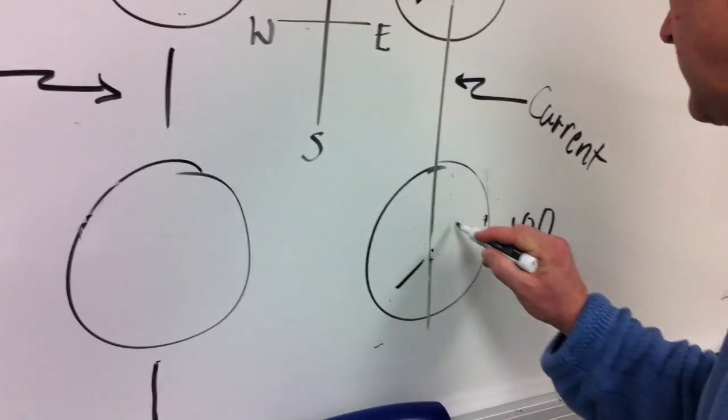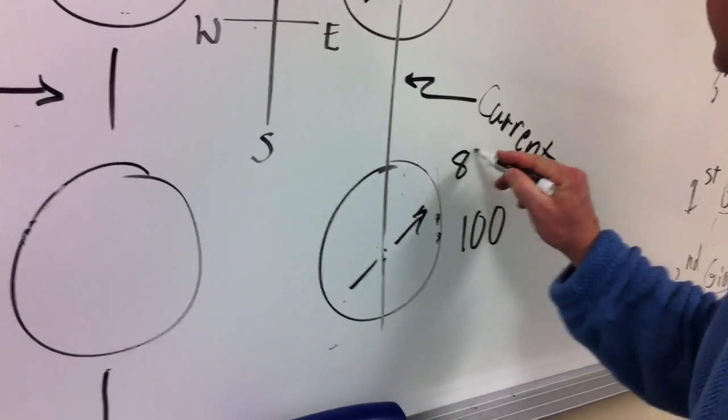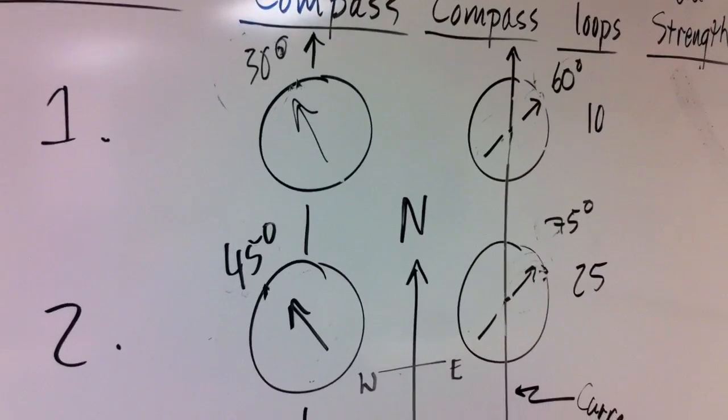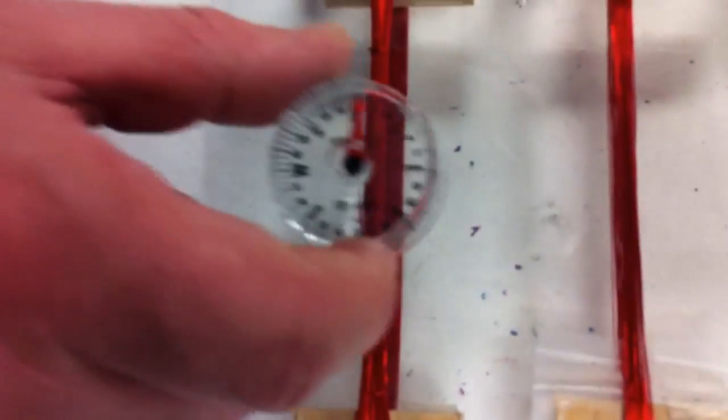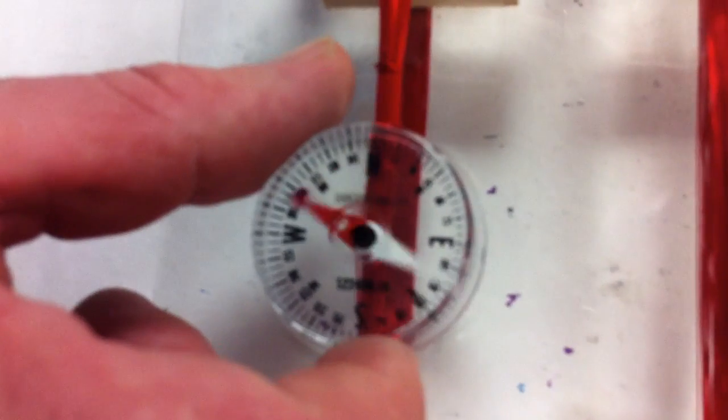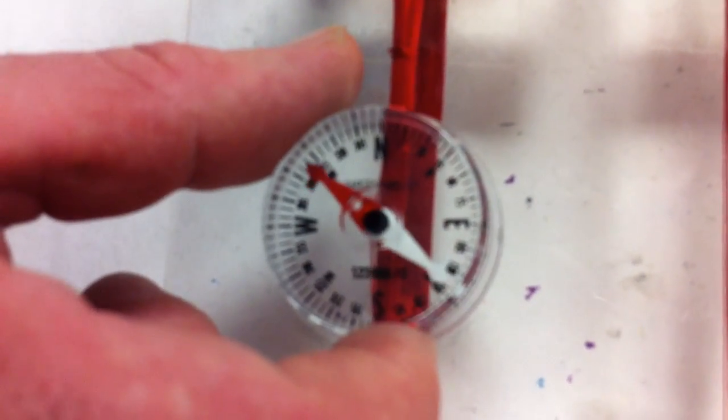So what that tells us is as you increase the current in the loop, you increase the magnetic field. Here's outside the loop. And it's still pretty strong too.